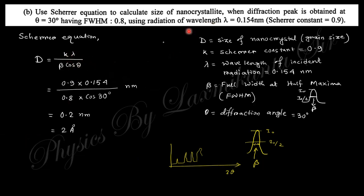If you put the given data within this equation, k is 0.9, lambda is 0.154 nanometer, beta is 0.8, and theta is 30 degrees. You will obtain 0.2 nanometer. So this is the nanocrystalline size.